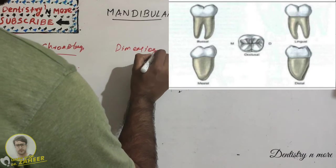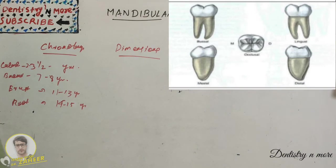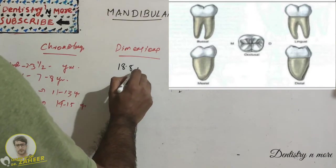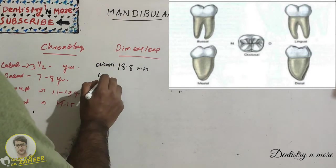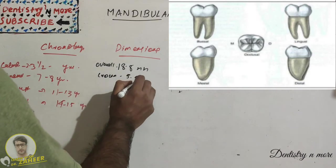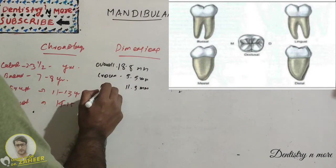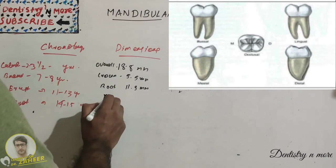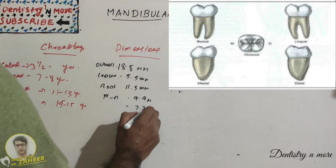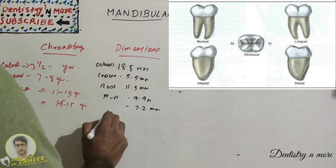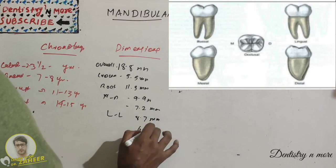Now we have dimensions. Coming to the dimension, second molar overall length is 18.8 mm. The crown length is very shorter, 5.5 mm. Length of root is 11.3 mm, then mesiodistal diameter is 9.9 mm, and the same at cervix is 7.2 mm, and labiolingual dimension is 8.7 and 6.4.